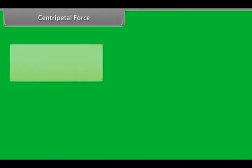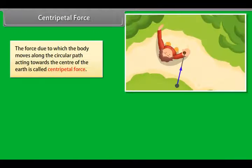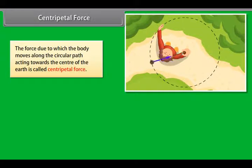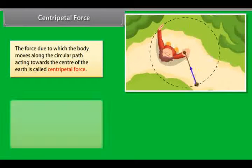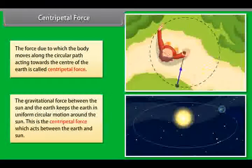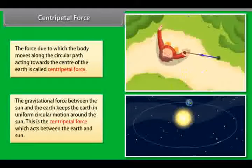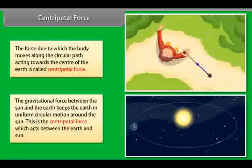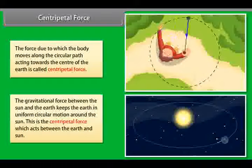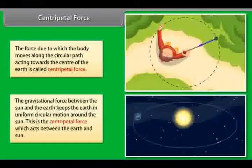Centripetal force: the force due to which the body moves along the circular path, acting towards the center of the earth, is called centripetal force. The gravitational force between the sun and the earth keeps the earth in uniform circular motion around the sun. This is the centripetal force which acts between the earth and sun.